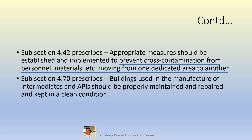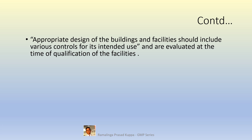Subsection 4.70 prescribes buildings used in the manufacture of intermediates and APIs should be properly maintained and repaired and kept in a clean condition. The facilities and equipment should be maintained in a good state of repair as per approved schedules. Appropriate design of the buildings and facilities should include various controls for its intended use and are evaluated at the time of qualification of the facilities.